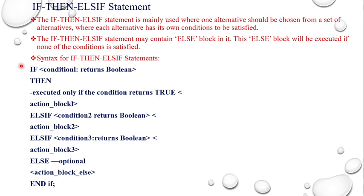The ELSIF statement is used where one alternative should be chosen from a set of alternatives, where each alternative has its own condition to be satisfied. It may also contain an ELSE block which will be executed if none of the conditions are satisfied — similar to a switch statement in C language. The syntax is: IF condition 1 THEN action block 1, ELSIF condition 2 THEN action block 2, ELSIF condition 3 and so on, with an optional ELSE block at the end, followed by END IF.